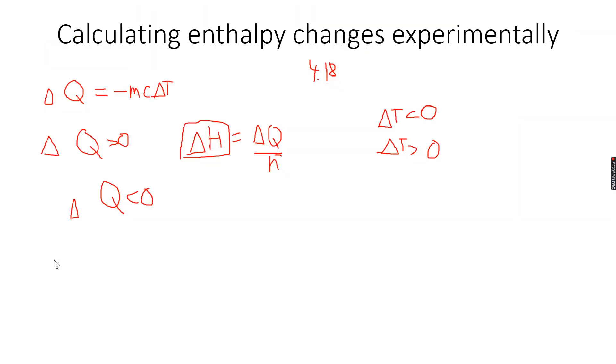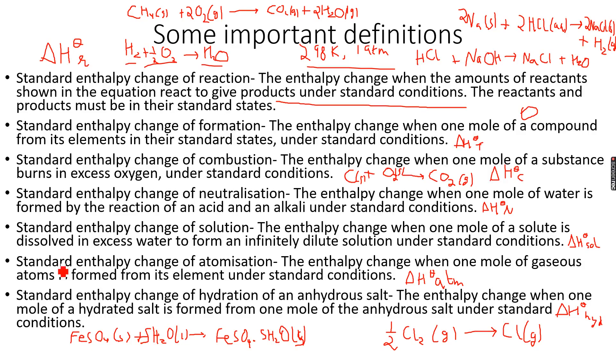And the second thing, I want to go back to the definitions that we did. So these are the definitions that we did. I just want you to go through all of them. Standard enthalpy change of reaction can be either endothermic or exothermic, right? So a reaction can be either endothermic or exothermic, so delta H not r can be either positive or negative. Standard enthalpy change of formation can also be either positive...